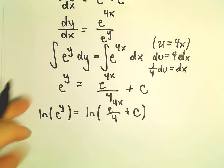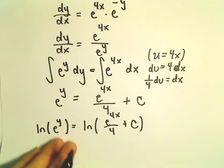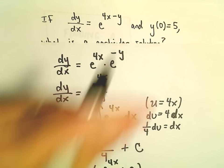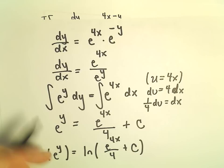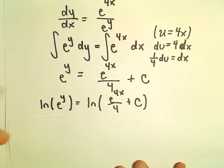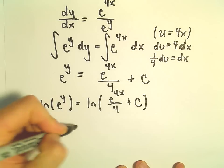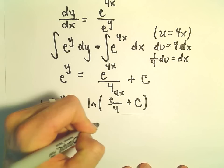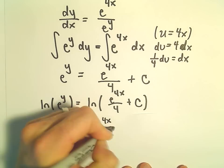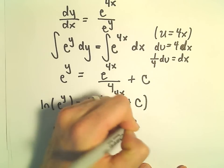We don't even have to do this at this point - we could have already solved for constant C. Either way is fine. On the left side, we'll be left with y. On the right side, we have y = ln(e^(4x)/4 + C).